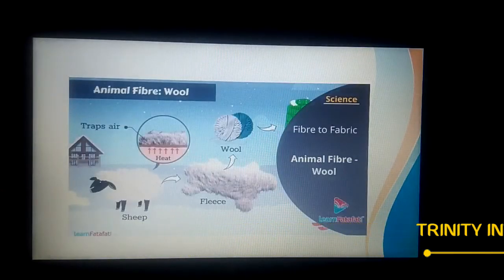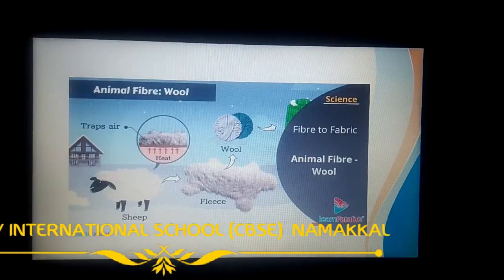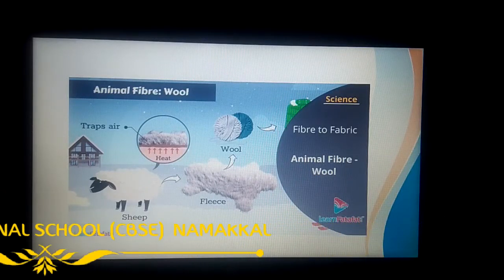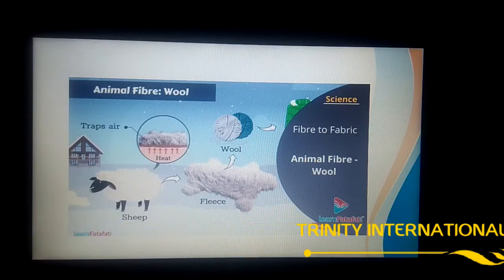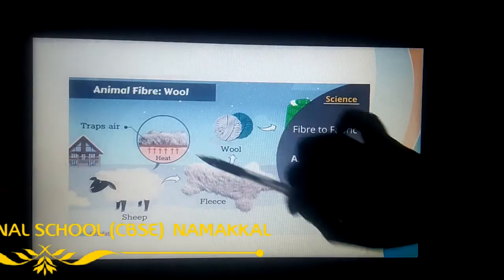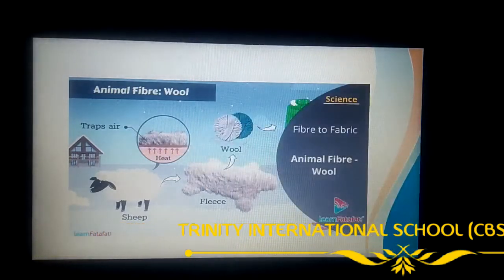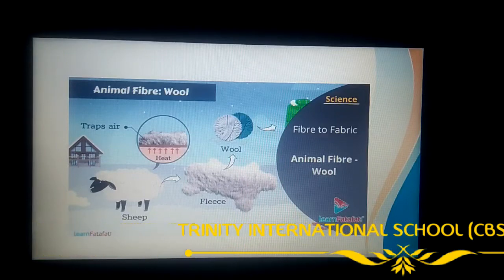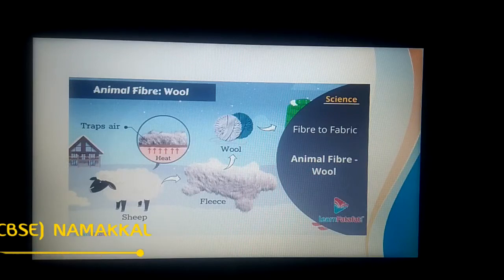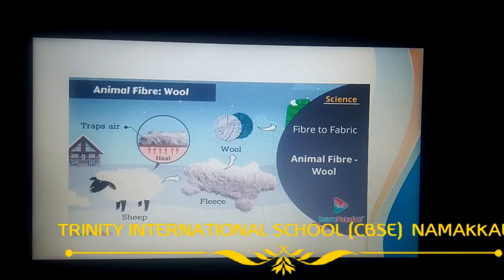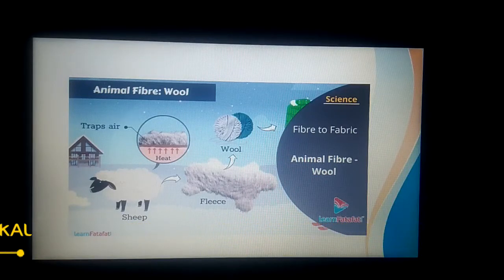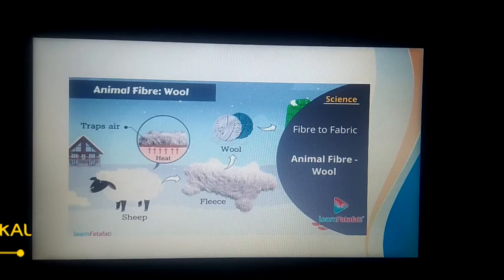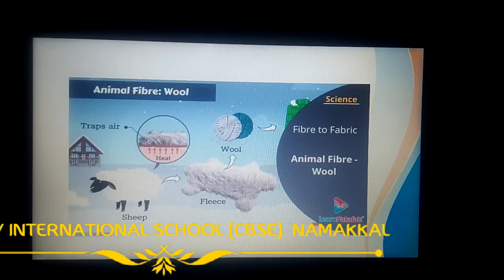Do you know why wool-yielding animals have a thick coat of hair? A thick coat of hair helps in trapping air. In between the hairs there are spaces, and air is trapped in those spaces. Air is a poor conductor — we already know this — so it does not allow heat to transfer from one place to another. This keeps the animal warm and prevents heat from escaping the body.